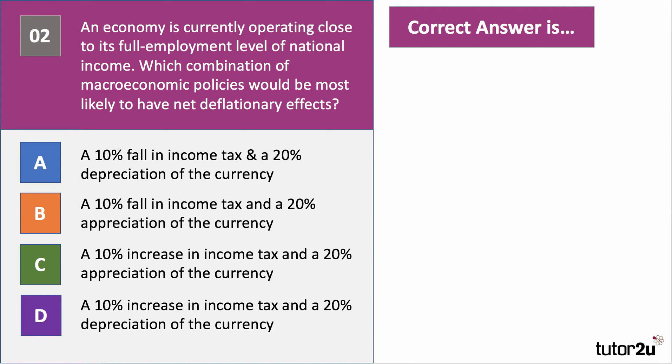Here we're looking for policies which bring about a fall in inflationary pressure — perhaps a net deflationary pressure. So we're looking for two policies that have the effect of reducing aggregate demand. The best answer is C — an increase in income tax and a 20% depreciation of the currency. A rise in income tax causes a fall in disposable incomes, which will squeeze consumption. A 20% depreciation of the currency causes a fall in import prices — strong pound means imports cheaper, exports dearer — so appreciation makes imports cheaper and puts a squeeze on export demand. That's the only combination where both factors act to deflate demand.